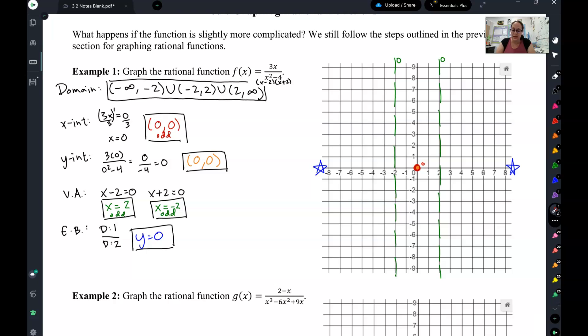Y-intercepts, we plug in 0. So I plug 0 in. I got 0 over negative 4, which goes to 0. So y-intercept is also at 0. Notice I graphed these as well. There's my odd x-intercept and my y-intercept.